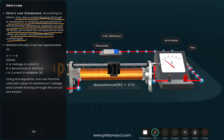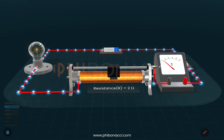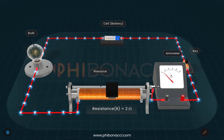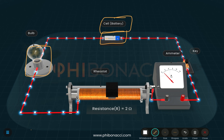Now let us start with the activity to understand the circuit. The first component is a cell, because without a cell we won't have current. A battery or cell is the most important part — it is from here that current starts flowing. Then we have a bulb, because when studying a circuit we need something to indicate whether current is present or whether it is high or low.